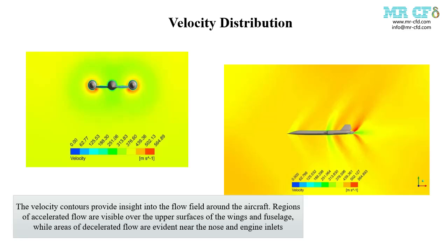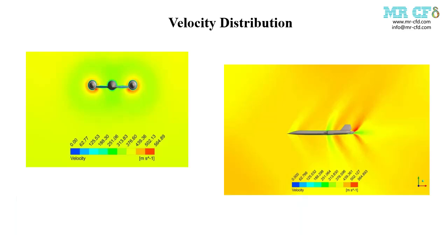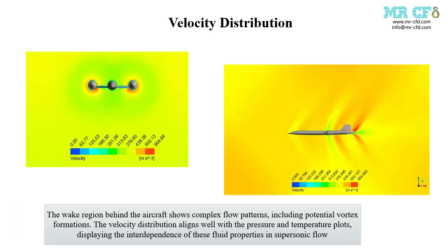The velocity contour provides insight into the flow field around the aircraft. Regions of accelerated flow are visible over the upper surfaces of the wings and fuselage, while areas of decelerated flow are evident near the nose and engine inlets. The wake region behind the aircraft shows complex flow patterns, including potential vortex formations. The velocity distribution aligns well with the pressure and temperature plots, displaying the interdependence of these fluid properties in supersonic flow.